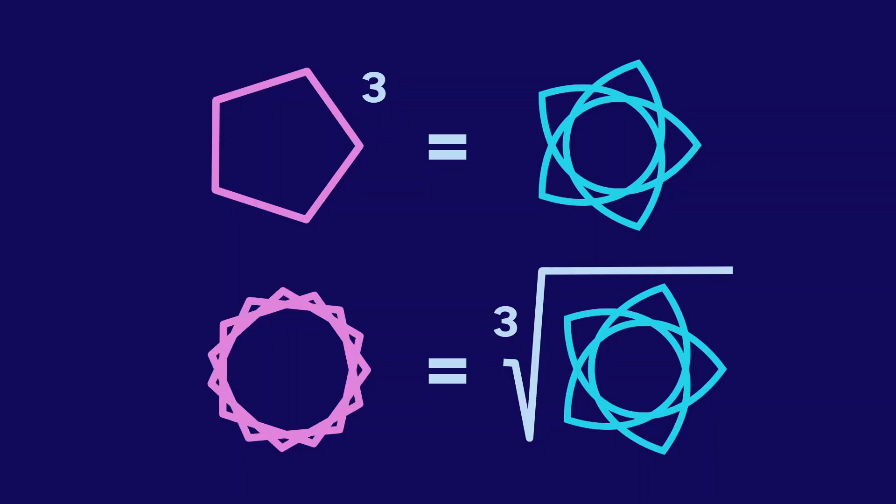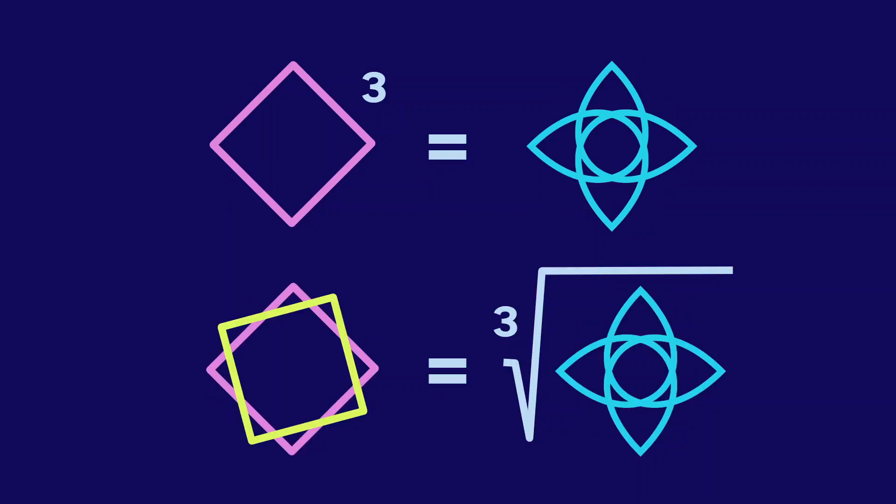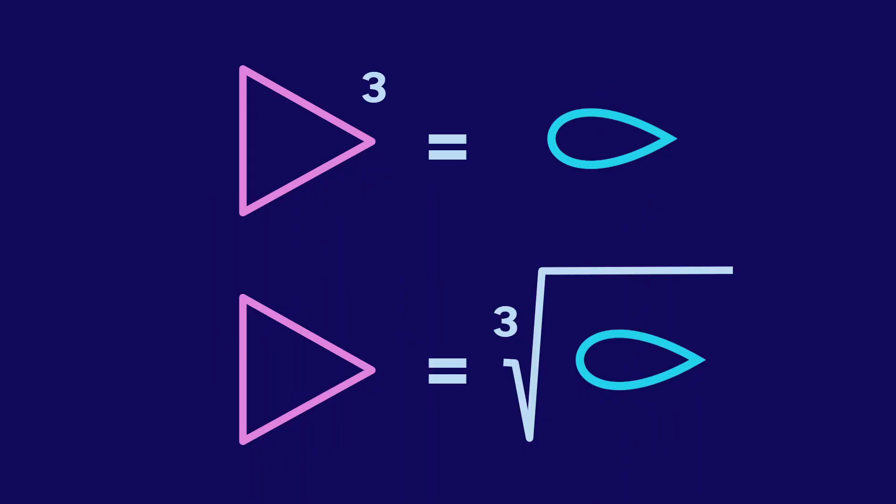The same thing happens with a square. Cubed, we get a flower, and the cube root of that is three squares. What about a triangle? Cubed, we get this teardrop, and the cube root of that is just one triangle.